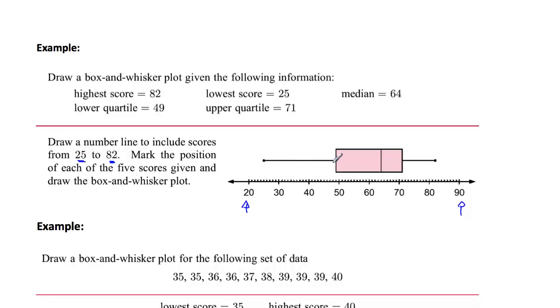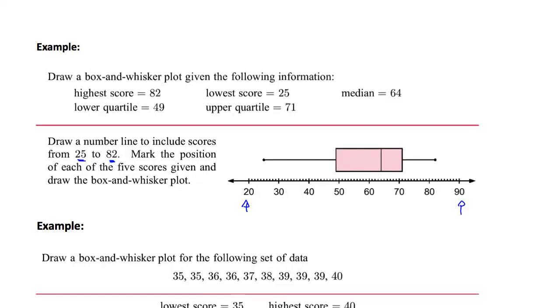And then the next thing to do is just to draw the box between the first quartile and the last quartile, draw a line in for the median, rub out the line and just make sure it's very clear, the dot for the whiskers and so on. So it's not a hard thing to do as long as you know what each of the five pieces of information are.